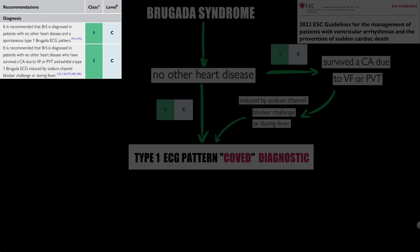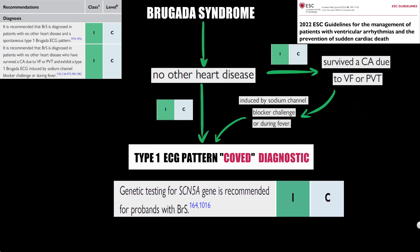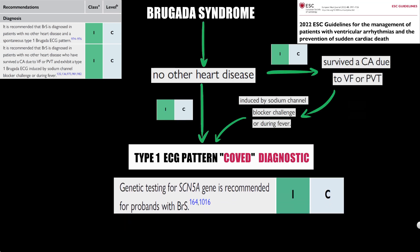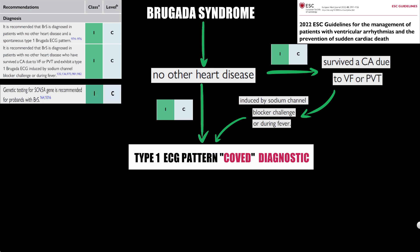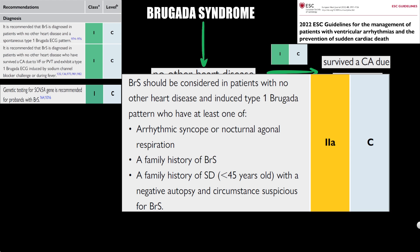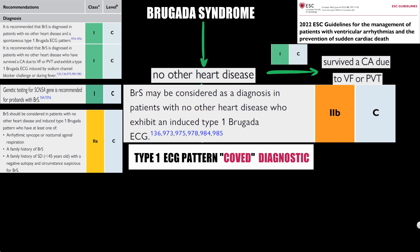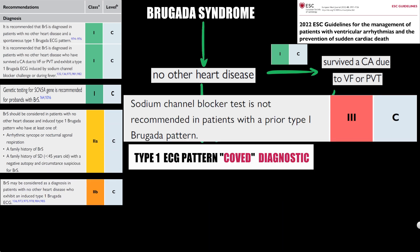Only the type 1 Brugada ECG pattern is diagnostic for Brugada syndrome. Genetic testing for SCN5A is recommended for probands with Brugada syndrome. Brugada syndrome should be considered in patients with no other heart disease and an induced type 1 pattern who also have arrhythmic syncope or nocturnal agonal respiration, a family history of Brugada syndrome, or a family history of sudden cardiac death with negative autopsy in circumstances suspicious for Brugada syndrome. Sodium channel blockers are not recommended in patients with a prior type 1 Brugada ECG pattern.